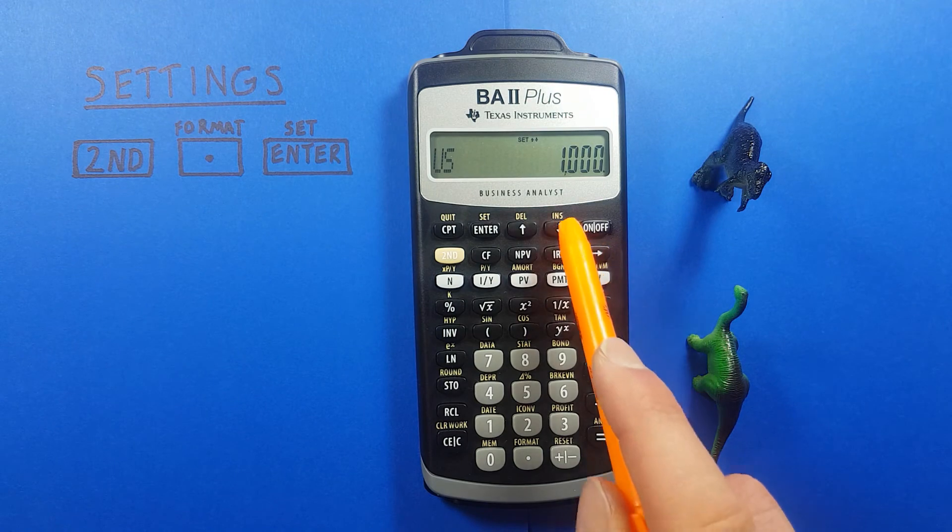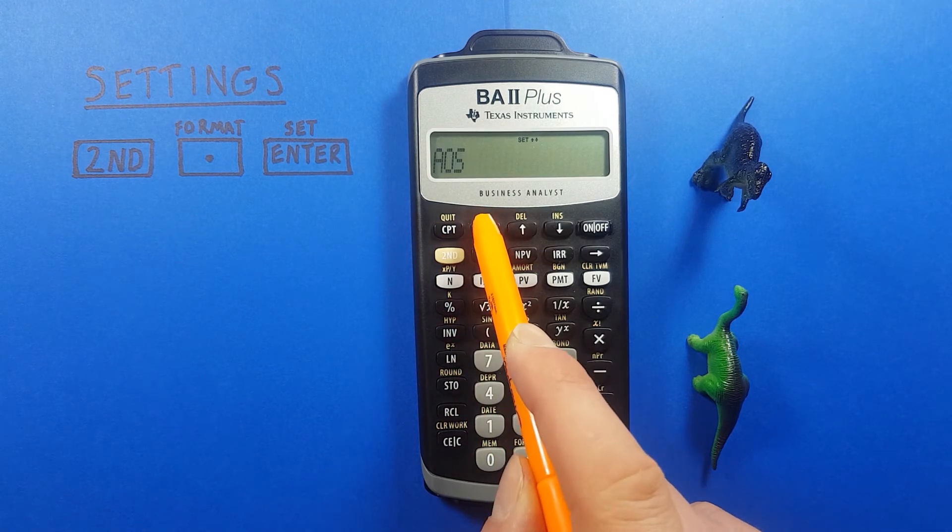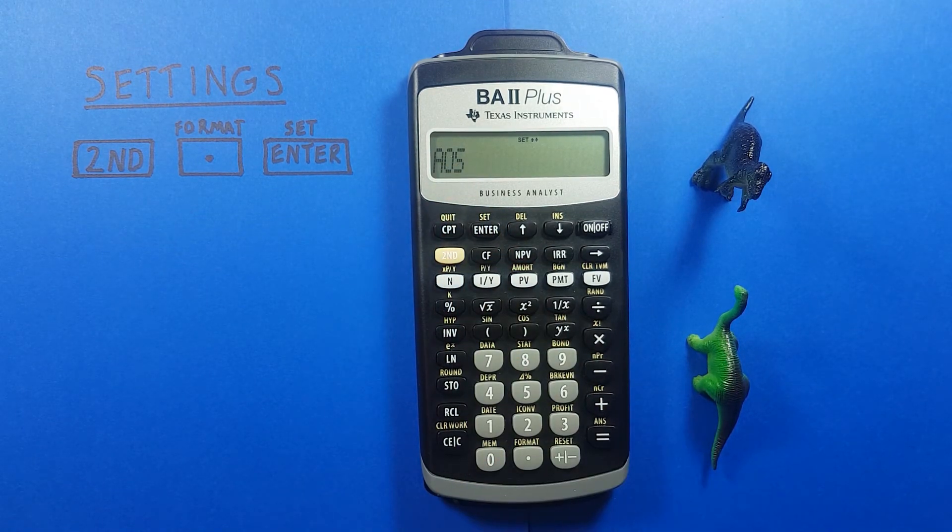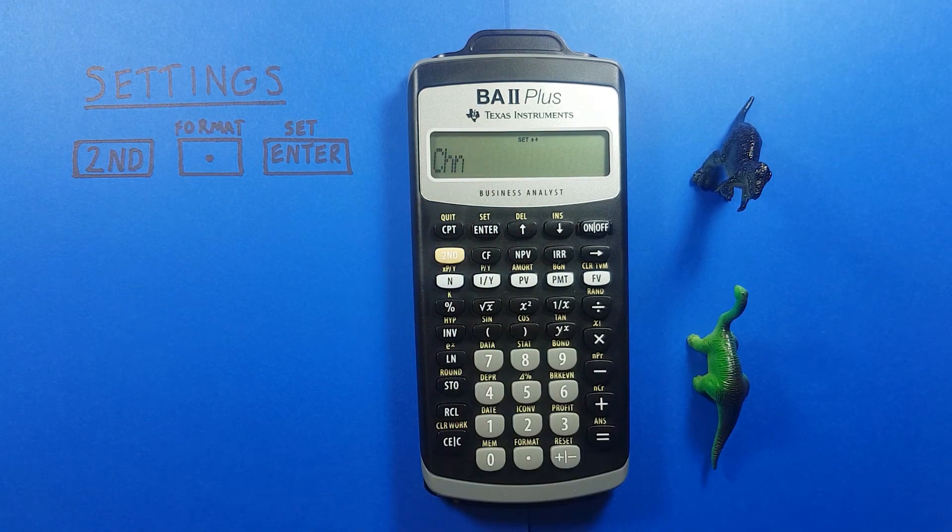And then if we go down one more we get into the calculation method. Right now it's set to chain but if we press second enter to change it we get AOS or algebraic operating system. Press it again and back to chain. So for now we'll leave it as chain.